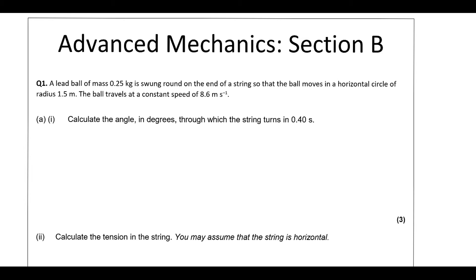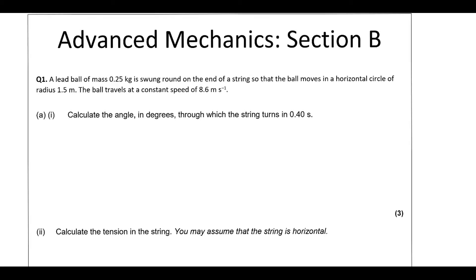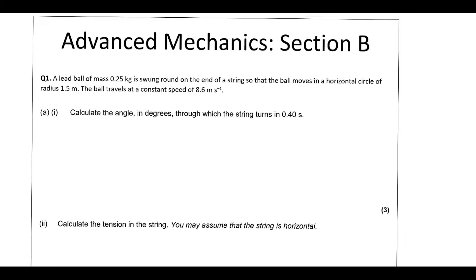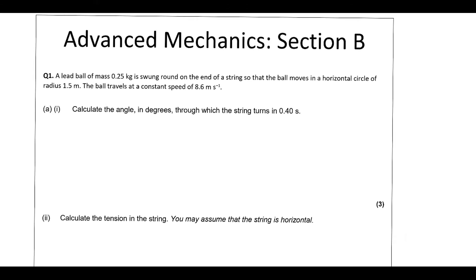In this video we're going to take a look at Section B of the recent Year 13 Half Term Assessment based on SHM and circular motion. We'll start off with some circular motion. We've got a lead ball of mass 0.25 kg swung around on the end of a string so it goes in a horizontal circle, and the ball travels at a constant speed of 8.6 m/s. Calculate the angle in degrees through which the string turns in 40 seconds.